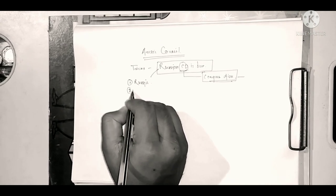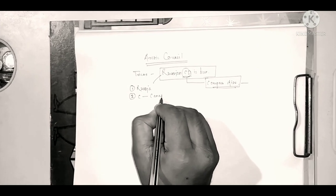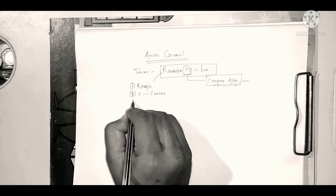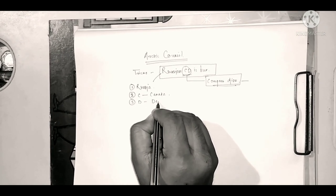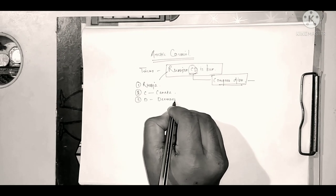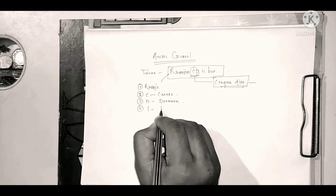Then from C it's Canada. From D it's Denmark. From I it is Iceland.